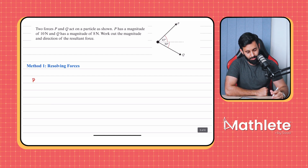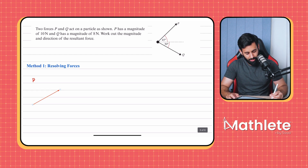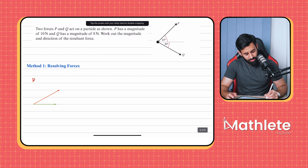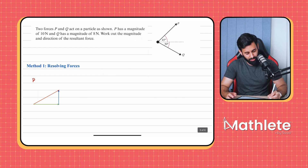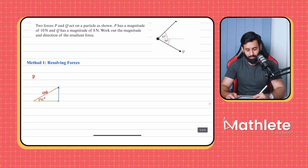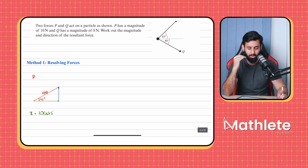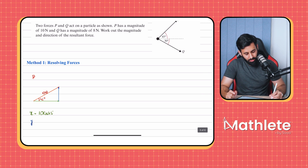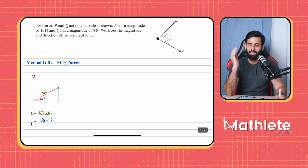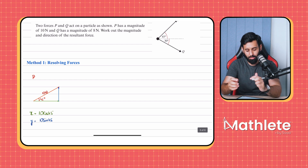We represent P by this arrow. Because it's acting at an angle, we break it down: the horizontal component shown in green and the vertical component in blue. The angle is 45 degrees and P is 10 newtons. The x component equals 10 cos 45 — the adjacent side uses cosine — and the y component equals 10 sin 45. Both are positive since they act rightwards and upwards.